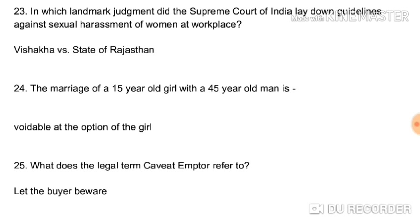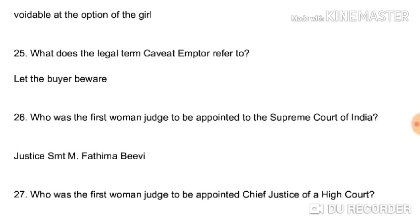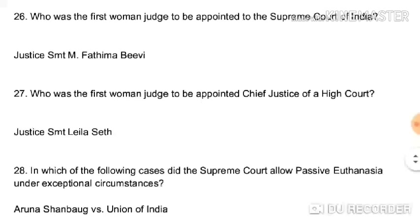The marriage of a 15-year-old girl with a 45-year-old man — is it void or voidable? It is voidable at the option of the girl. Voidable means at the option of the other party, which is the girl here. Caveat emptor means 'buyer beware' — when you go to a shop and purchase any goods, it is your duty to first check whether the goods are in good condition and functioning as prescribed.